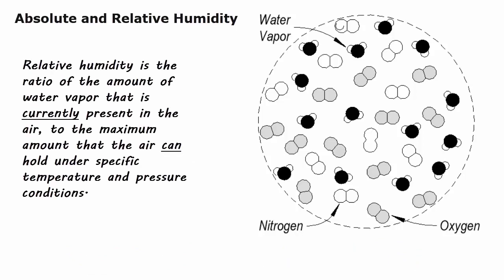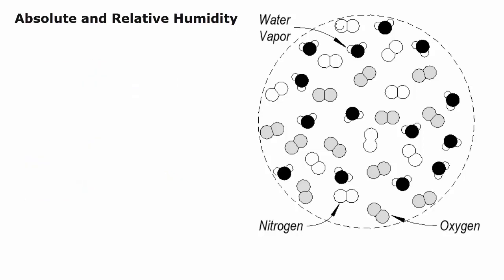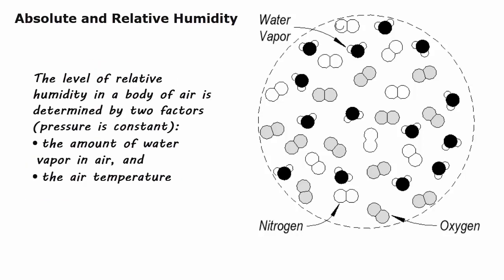Relative humidity is the ratio of the amount of water vapor currently present in the air to the maximum amount that the air can hold under specific temperature and pressure conditions. The level of relative humidity in a body of air is determined by two factors, assuming pressure is constant: the amount of water vapor in air and the air temperature.